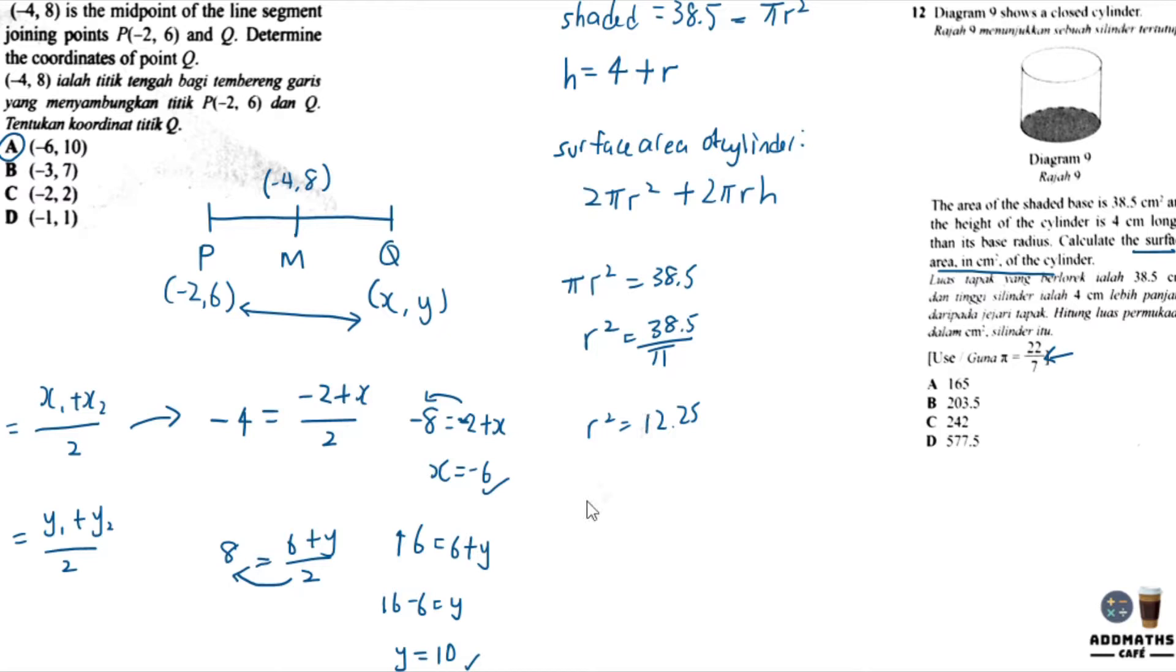And r will finally give you square root of 12.25 which is 3.5. So what is height? Height will be 4 plus 3.5 which will be 7.5.